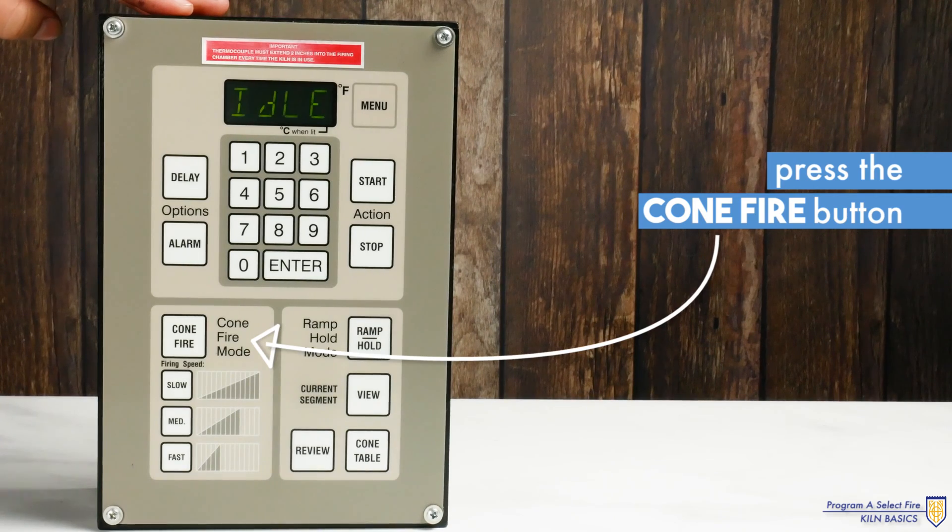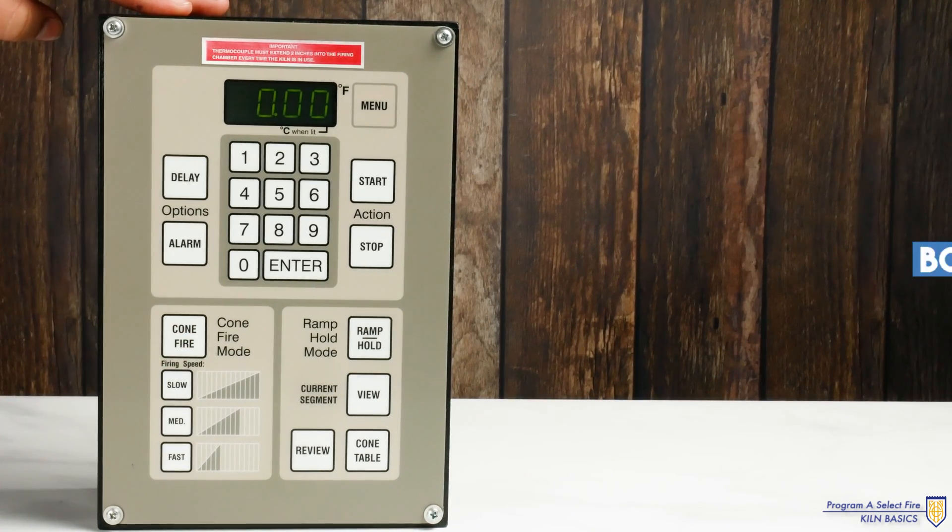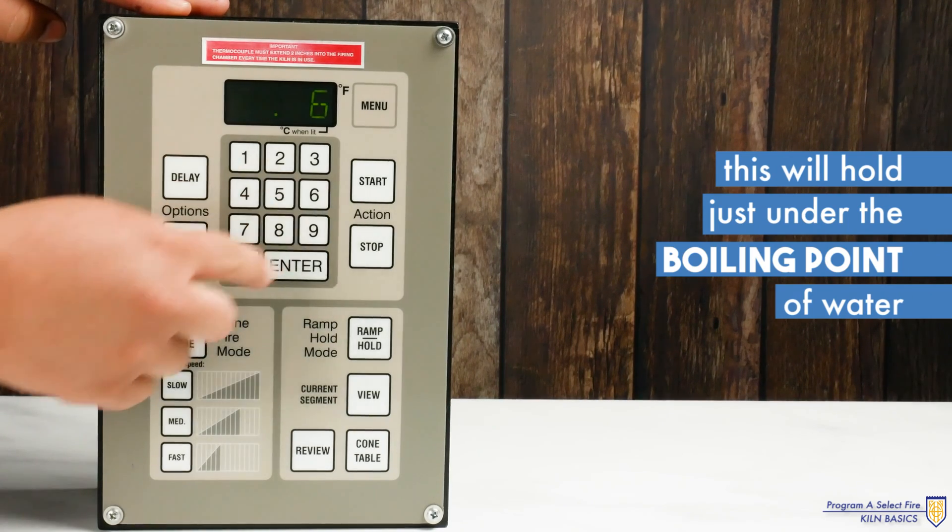Press the cone fire button. It will then prompt you to enter a preheat time. This will hold just under the boiling point of water to ensure all the moisture is driven out of the clay body.